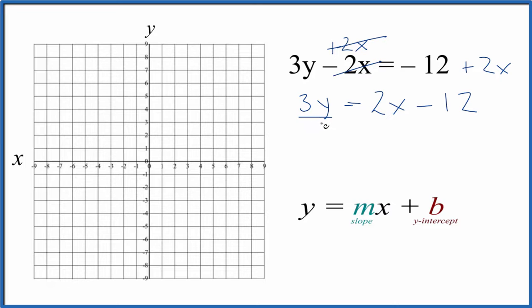Now we can divide both sides by 3 to get y by itself. 3 over 3 is 1, so we end up with y. That equals 2x/3 - 12/3. 3 goes into 12 four times, so it's minus 4.